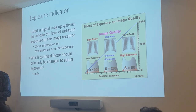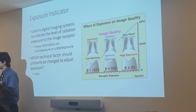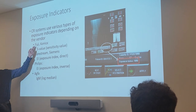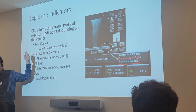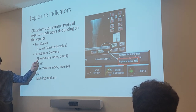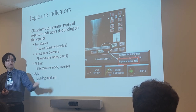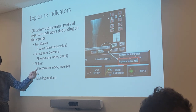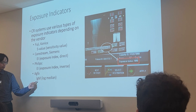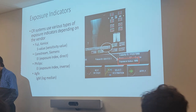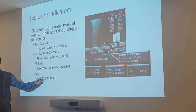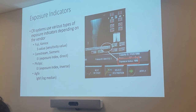We have a lot of different exposure indicators because we have a lot of different vendors. Each company has its own form of exposure indicator. For example, Fuji and Konica use S-value (sensitivity value or S-number). CareStream and Siemens use exposure index (EI), which is directly proportional to exposure and dose. Phillips also uses EI, but theirs is inversely proportional to exposure and dose — more like S-value. And Agfa uses log median (log M).